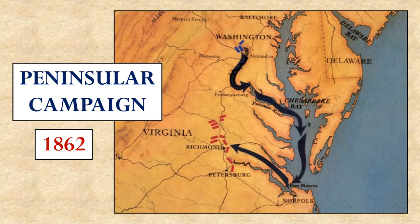McClellan was so against directly engaging Lee's army in Northern Virginia that he foolishly set out on what became known as the Peninsular Campaign. He marched his troops from Washington, D.C. to the Chesapeake Bay, put them on boats, and shipped them down the coast to Virginia. There he unloaded them and marched them on the Confederate capital of Richmond, hoping to outflank the Confederate armies and enter Richmond from the south without even having to fight a battle. He was wrong. He was very slow and very cautious, gave Lee plenty of time to get ready for him, and was forced to retreat when he finally attacked Richmond. It was a humiliating loss as he withdrew his troops back to Washington, D.C.